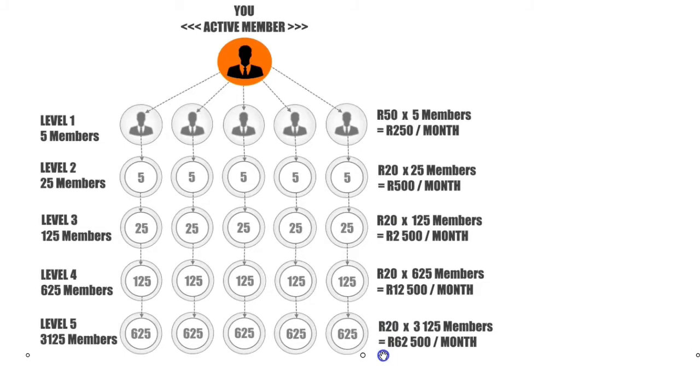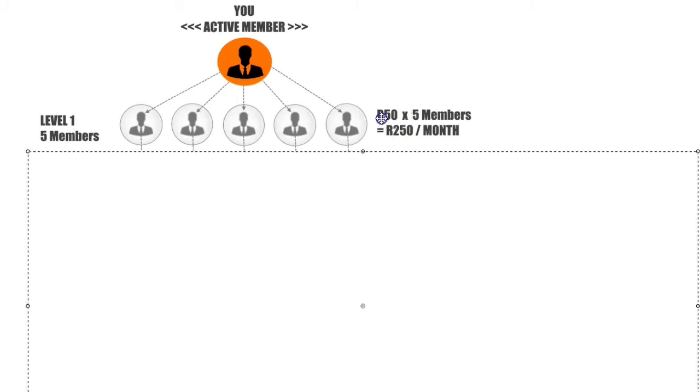In Level 1, you will earn 50 Rand commission payments for every active member that you personally refer to Millionaire Library. You are only required to work in Level 1.